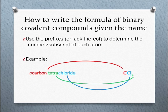Now that you've learned how to write the names, how do you write the formulas if you have the name of a binary covalent compound? In a way, this process is much simpler than the process for ionic compounds because you can use the prefix, or lack of a prefix, to determine the number of each element in the compound and write the subscripts for the formula.